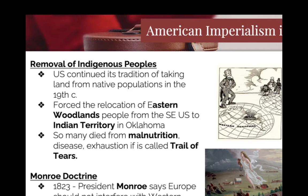We're going to have the Transcontinental Railway to facilitate Manifest Destiny. We are also going to overthrow Hawaii's government.